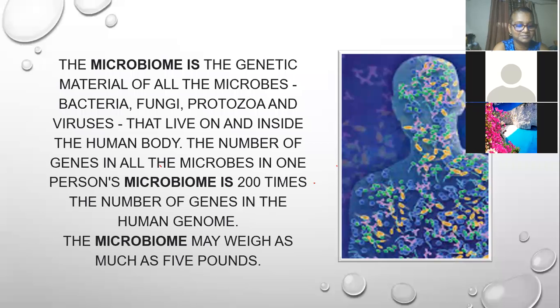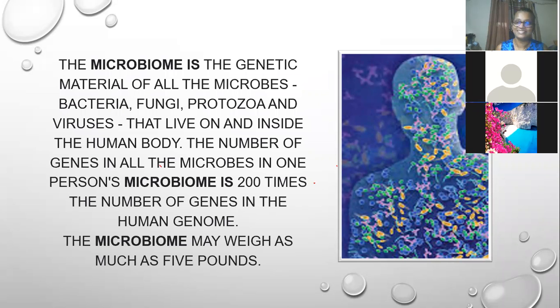Some of the things microbes do — which is why we call it an organ — is they make 30 different neurotransmitters in our body: serotonin, melatonin, dopamine, epinephrine, norepinephrine, acetylcholine, and things of that nature. These are the things that run our body. They are a type of hormone. Serotonin, for example, determines our mood. Approximately 95% of serotonin is produced in the gut.